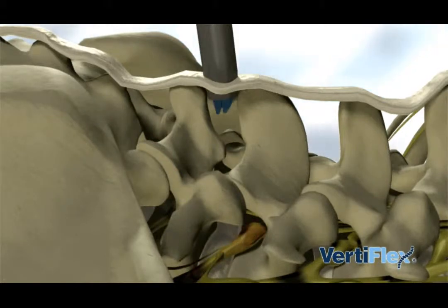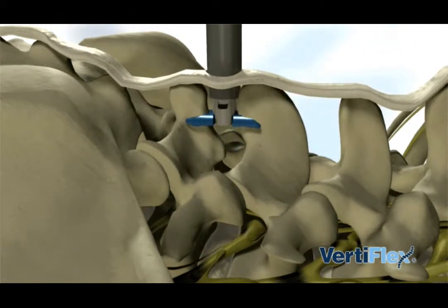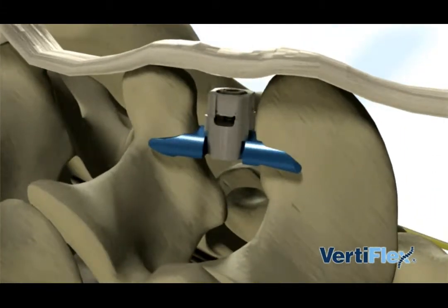No bone and only minimal soft tissue are removed during this procedure. Once implanted, the device can act as a means of support to open the passageways through which the nerve roots travel from your lower spine to your legs.